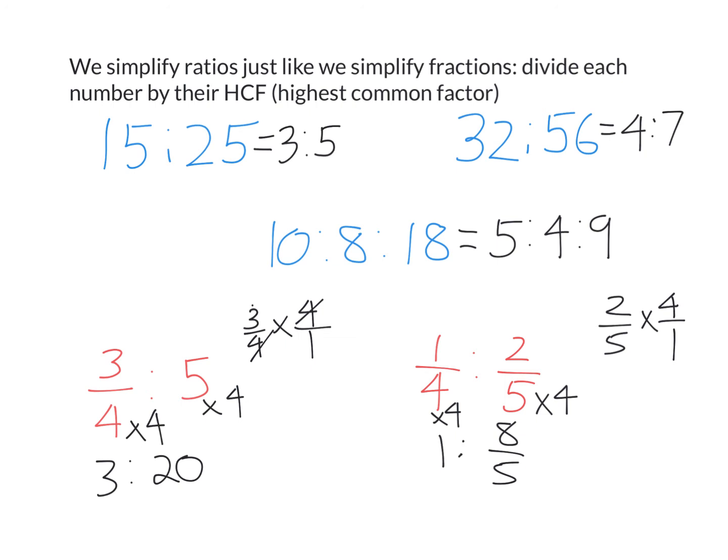This still isn't simplified because I have a fraction here. So how do I get rid of this denominator? How do I make this into a whole number? I times by 5. I times by its denominator. So if I times the right number by 5, I have to times the number on the left by 5. So 1 times 5 is 5. Eight over 5 times 5 over 1. Once again, 5s cancel out. I'm just left with 8 over 1, which is 8. So 1 quarter to 2 fifths is the same as 5 to 8.